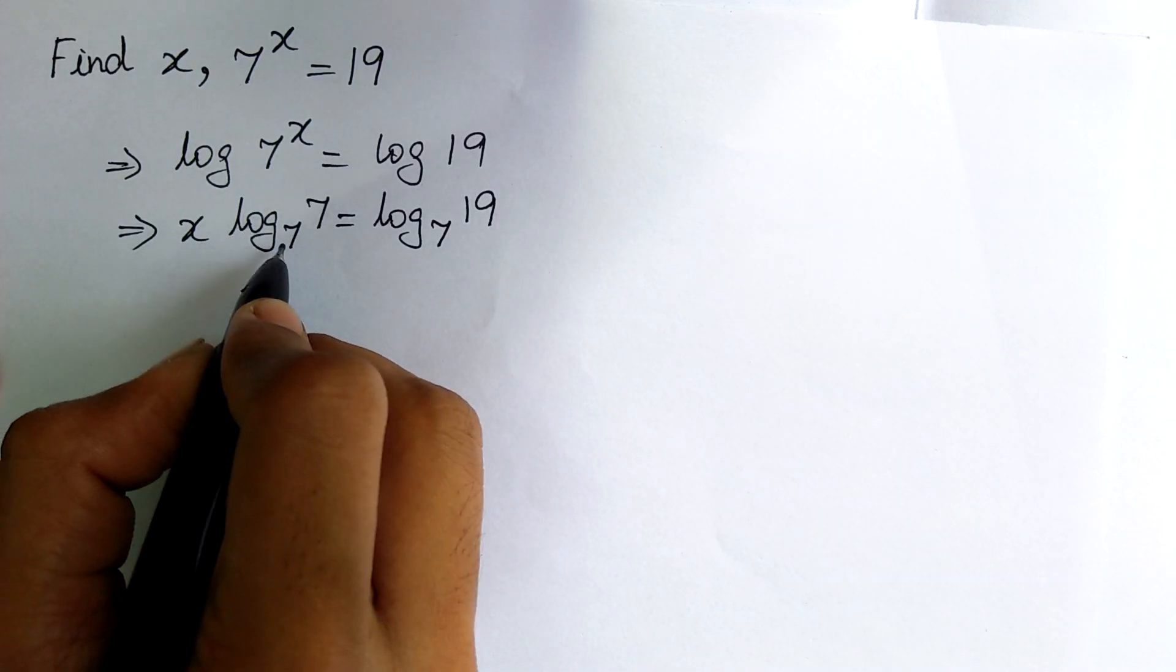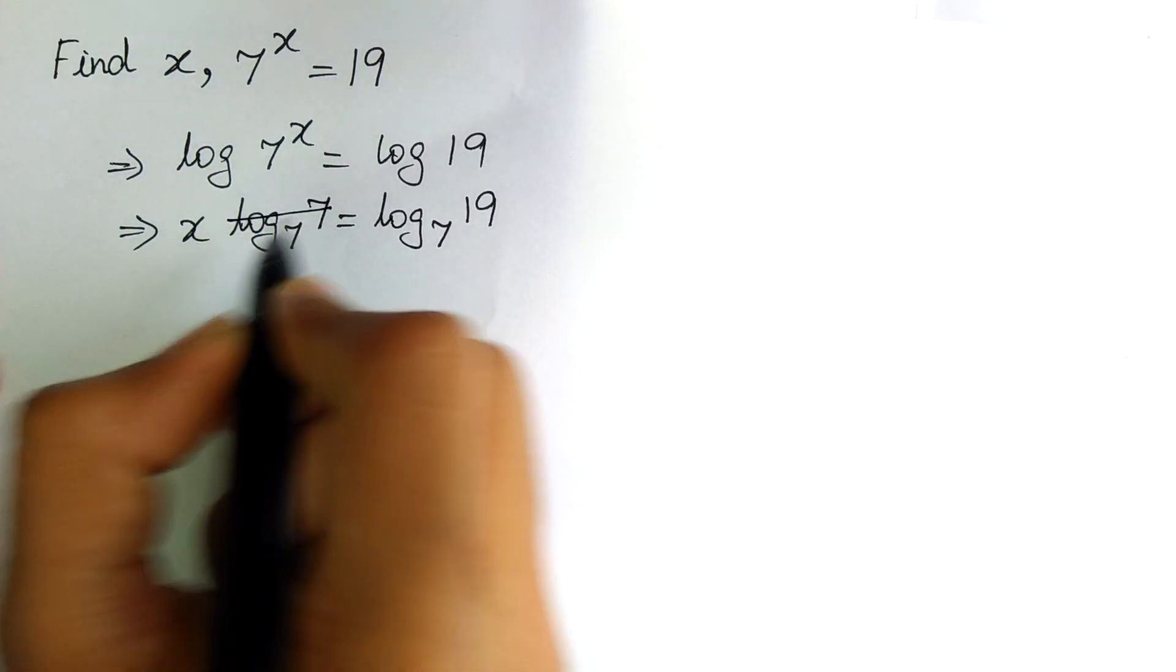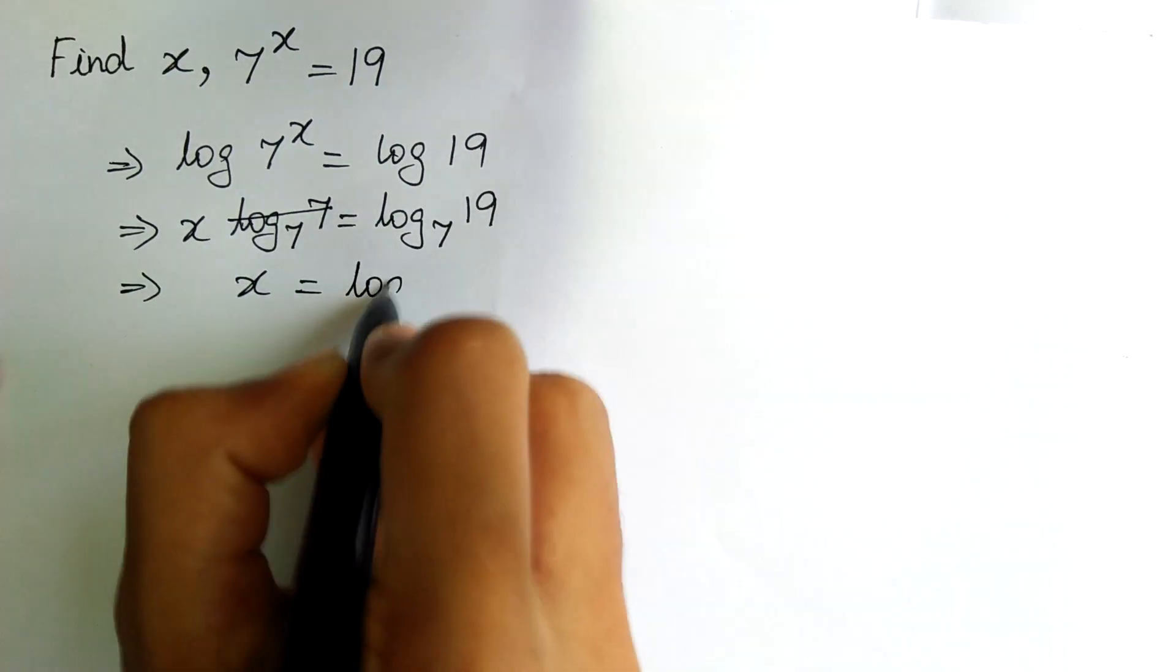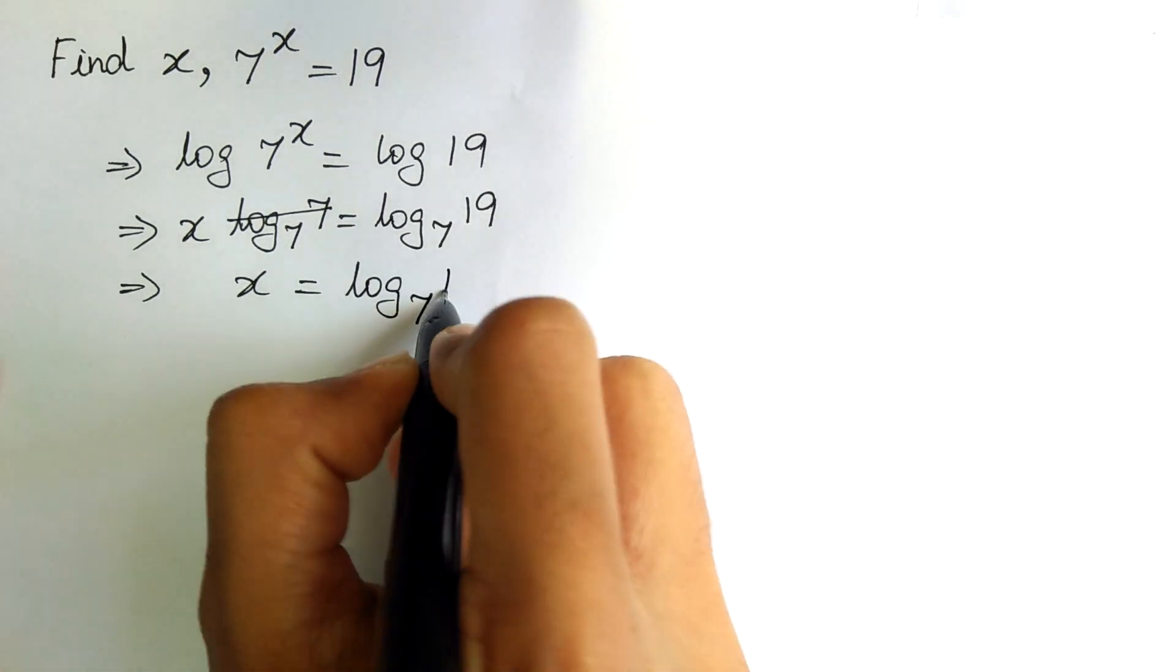Here, log to the base 7 of 7 gets cancelled. Therefore, the exponent x is equal to log to the base 7 of 19.